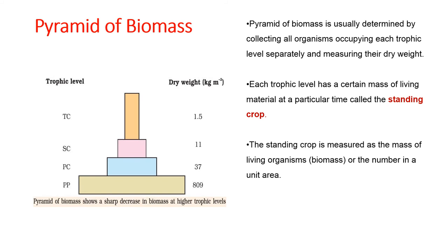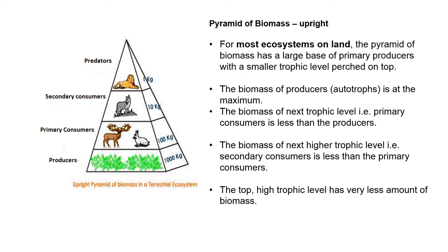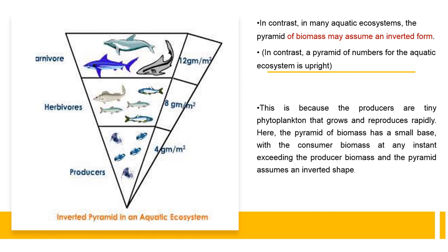Each trophic level has a certain mass of living material at a particular time called standing crop. The standing crop is measured as the mass of living organisms or their number in a unit area. In an aquatic ecosystem, the biomass of producers — phytoplankton — has a very low dry weight of 4 grams per cubic meter, while carnivores and big fishes at higher levels have a higher dry weight of 12 grams per cubic meter. So the pyramid of biomass in an aquatic ecosystem is inverted due to the low biomass of producers.